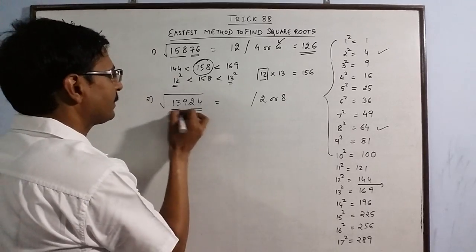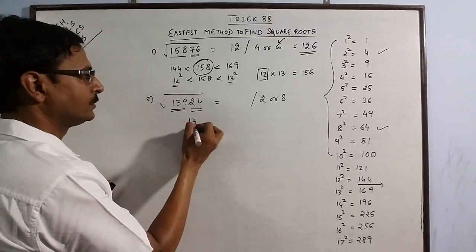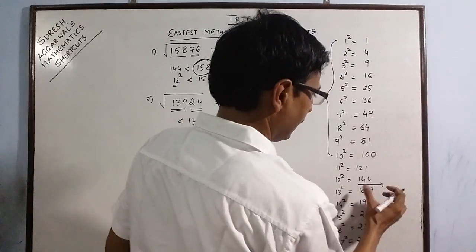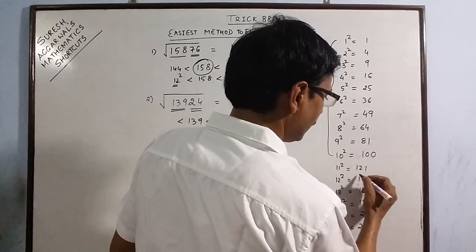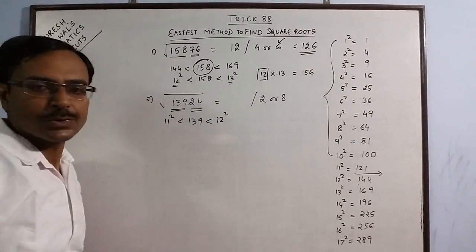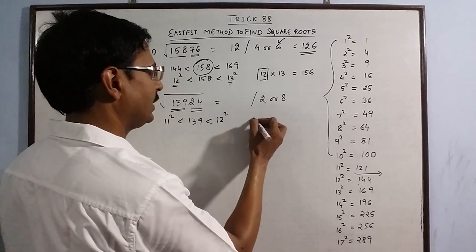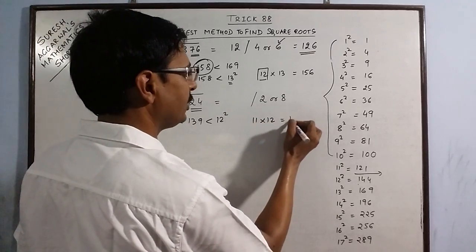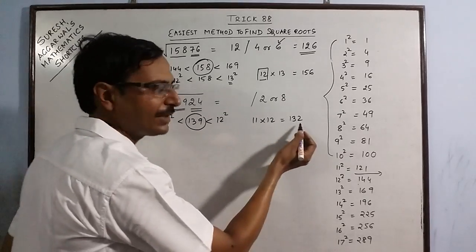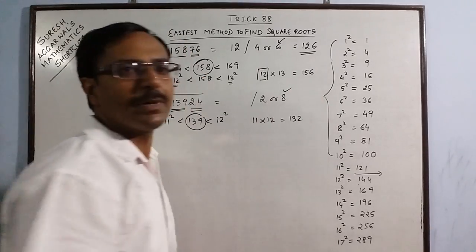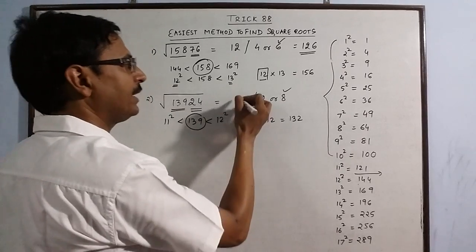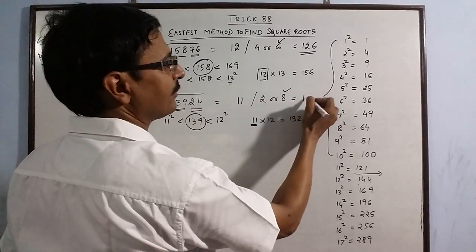Now observe the other part, 139. Now 139 is lying between these two numbers, 11 square and 12 square. So just take the product of 11 and 12, which is 132. Now see this number, it is greater than 132. So you take the greater number 8 and smaller number 11. So your answer is 118.